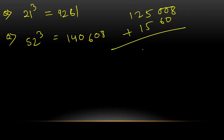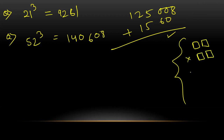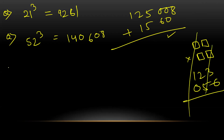One thing I forgot to mention: in the last section we discussed multiplication of two digits cross two digits and three digits cross three digits. But what if it's three digits cross two digits or two digits cross three digits? We just add a zero. For example, 123 into 56 becomes 123 into 056 — same method applies.